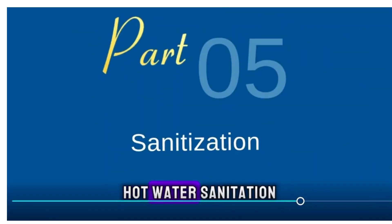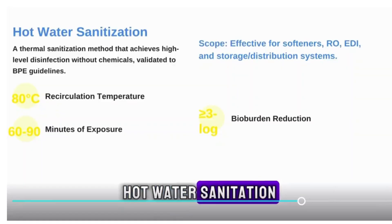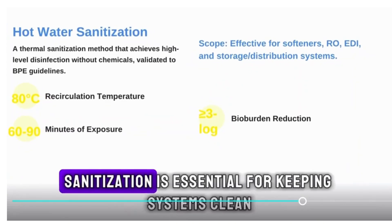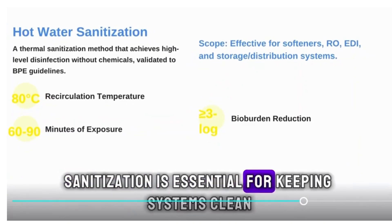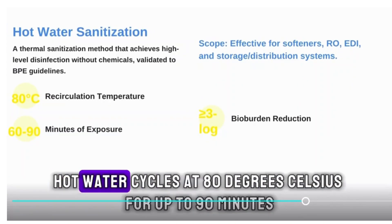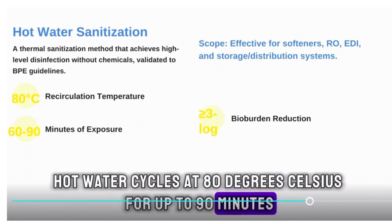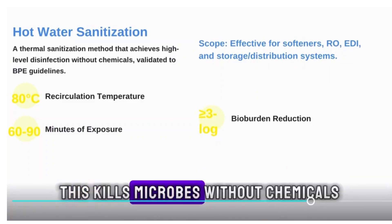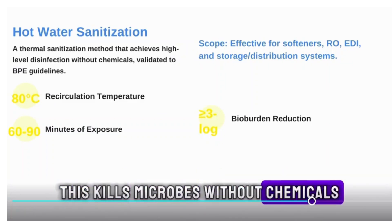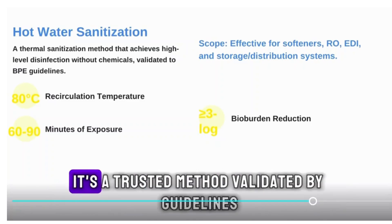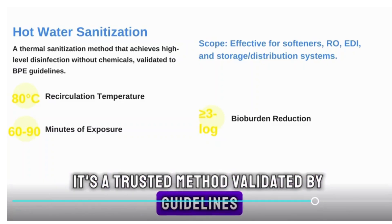Sanitization is essential for keeping systems clean. Hot water cycles run at 80 degrees Celsius for up to 90 minutes. This kills microbes without chemicals and is a trusted method validated by guidelines.